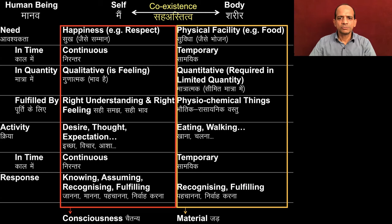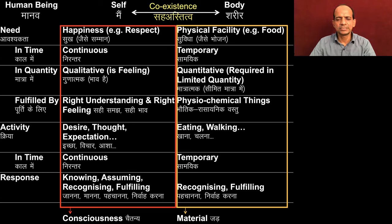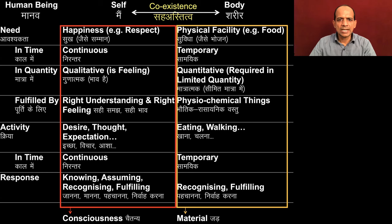In our lectures, we already have the clarity that the self and the body are two distinct realities. The self is a conscious entity and the body is a material entity. The needs of the self and body are entirely different, and the activities of the self and the body are also different, and the response is also different. So this clarity we already have, and now we are going to understand this through our direct observation.